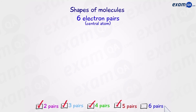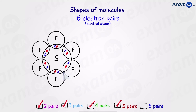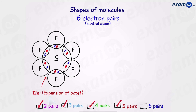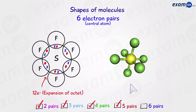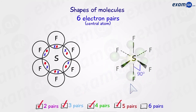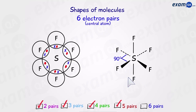Moving on to the family of six electron pairs — such as sulfur hexafluoride, SF6. Notice there are 12 electrons around the central atom; we're used to seeing a maximum of eight, but this is an exception called the expansion of the octet, and sulfur hexafluoride is a very common example. In this molecule, the angle is 90 degrees everywhere — it doesn't matter which angle you look from, it's always 90 degrees. This shape is called octahedral.